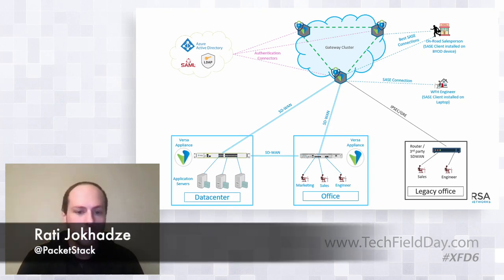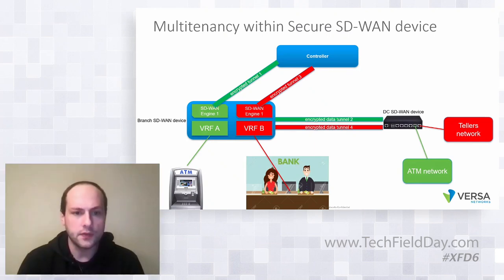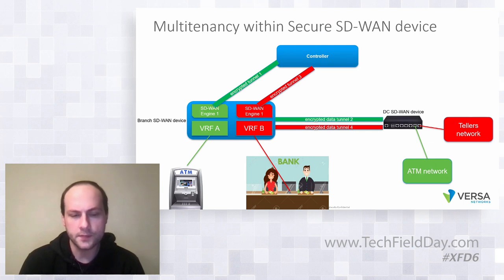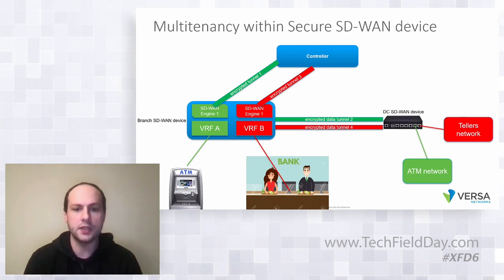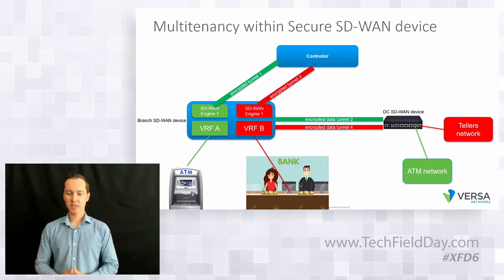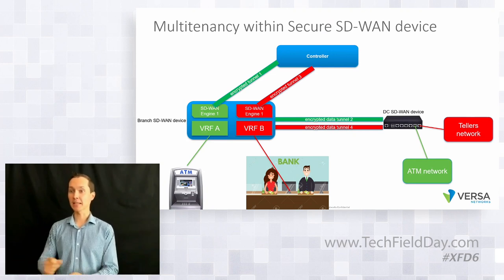Can you move back to the previous slide? I see here you have different tunnels per VRF — are those actual tunnel interfaces per VRF, or is it path virtualization with tagging to give the feeling of different virtual overlays? If it is different tenants or different SD-WAN engines, those are going to be completely independent SD-WAN IPsec tunnels with their independent SLA probes related only to that specific tenant.